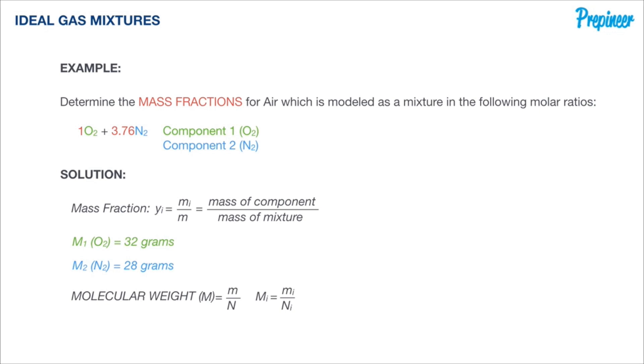So knowing the individual mole contributions and the molecular weight of each component, we can rearrange this formula to read as such. The mass of each individual component is equal to the molecular weight of that component times the number of moles that component is contributing. This will allow us to find that individual mass that we're looking for.